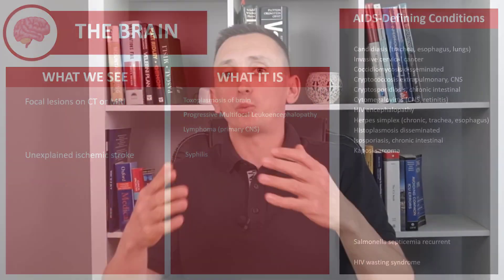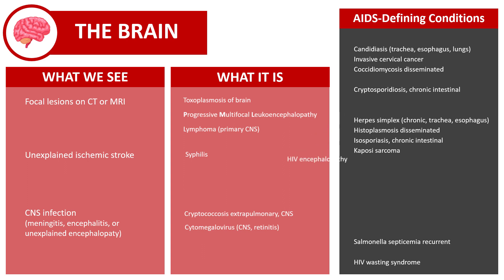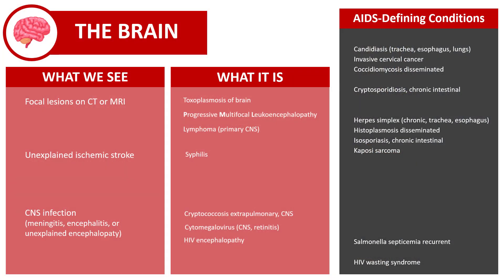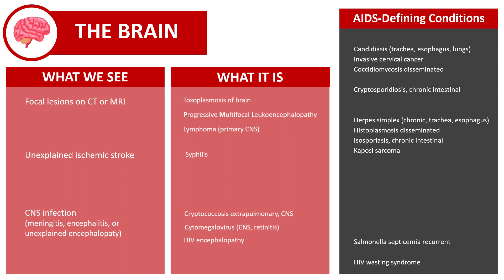HIV itself can affect the brain in acute stages — it can cause meningitis or encephalitis, even with altered level of consciousness and delirium. So if you have a patient with suspected encephalitis or bacterial meningitis, you cannot go wrong by testing them for HIV. This is crucial because it opens possibilities you wouldn't consider in an immunocompetent patient: cerebral toxoplasmosis, PML, primary CNS lymphoma, and cryptococcal meningoencephalitis. These conditions are typical in AIDS but extremely uncommon in immunocompetent patients. In conclusion, any patient with an unexplained focal CNS lesion, CNS infection, or ischemic stroke without obvious risk factors — test them for HIV.